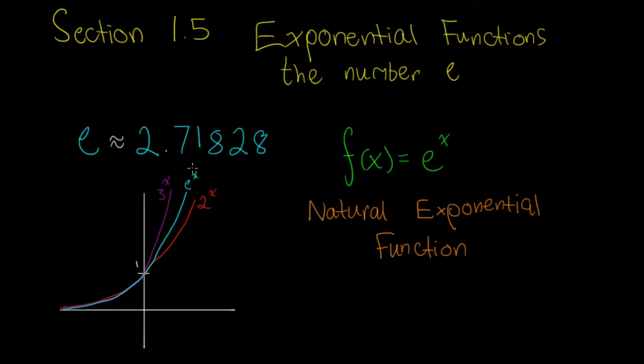And this graph right here, this exponential graph, is kind of important in calculus because when we draw a tangent line to the point (0, 1) of these graphs, we get lines of different slopes. And the line tangent to e to the x at (0, 1) happens to be the line y equals x.